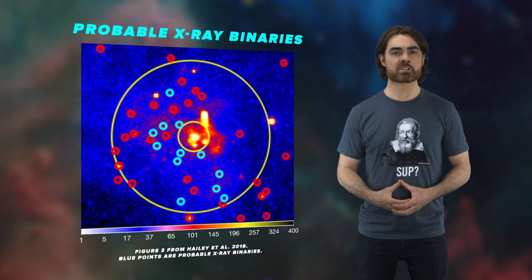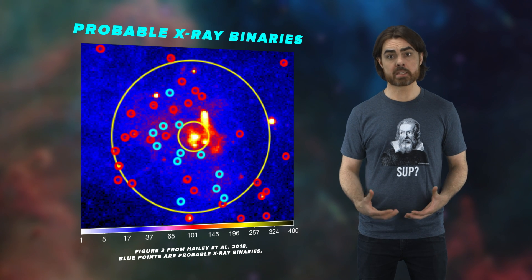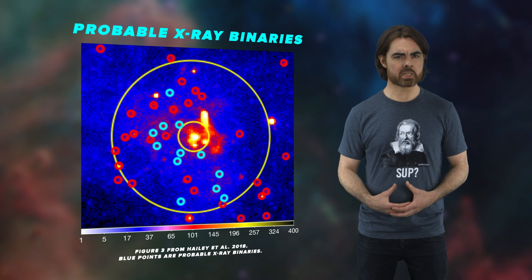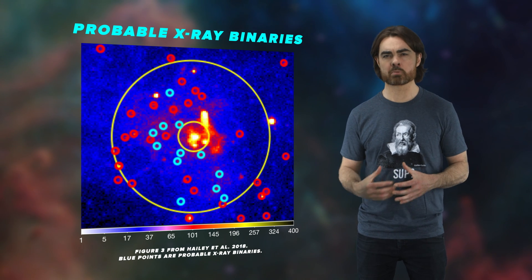Now, that's tens of thousands of times the black hole density anywhere else in the galaxy. So yeah, it's a swarm of black holes. If the sun was near the galactic core, the nearest black hole would be inside the solar system's Oort cloud.